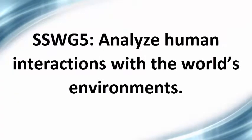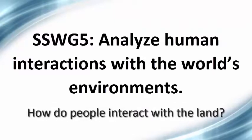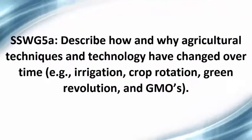Let's look at the standard and element we will address in this video. SSWG-5 asks teachers to teach students to analyze human interactions with the world's environments. Element A asks teachers to teach students to describe how and why agricultural techniques and technology have changed over time — for example, irrigation, crop rotation, green revolution, and GMOs.